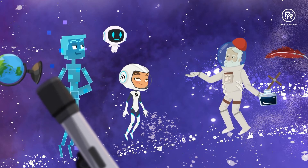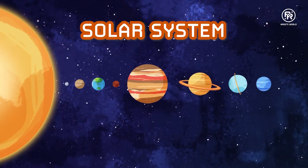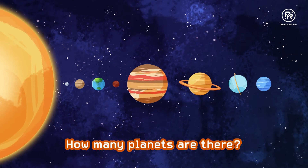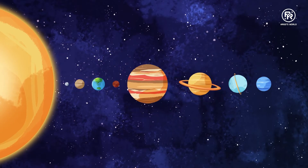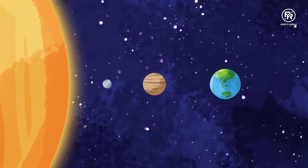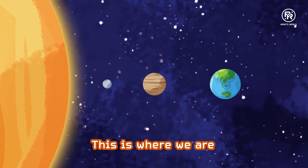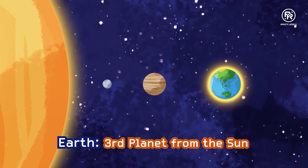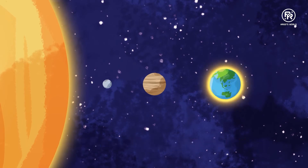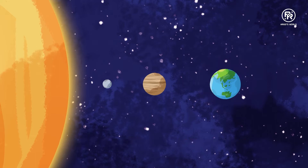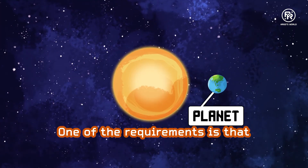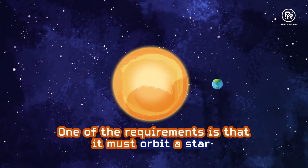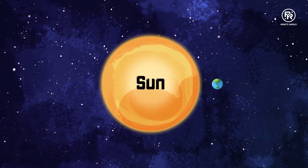I don't. This is our solar system. How many planets are there? Eight. Very good. As you can see, this is where we are — Earth. Third planet from the Sun. Correct. To qualify as a planet, one of the requirements is that it must orbit a star — in this case, the Sun.